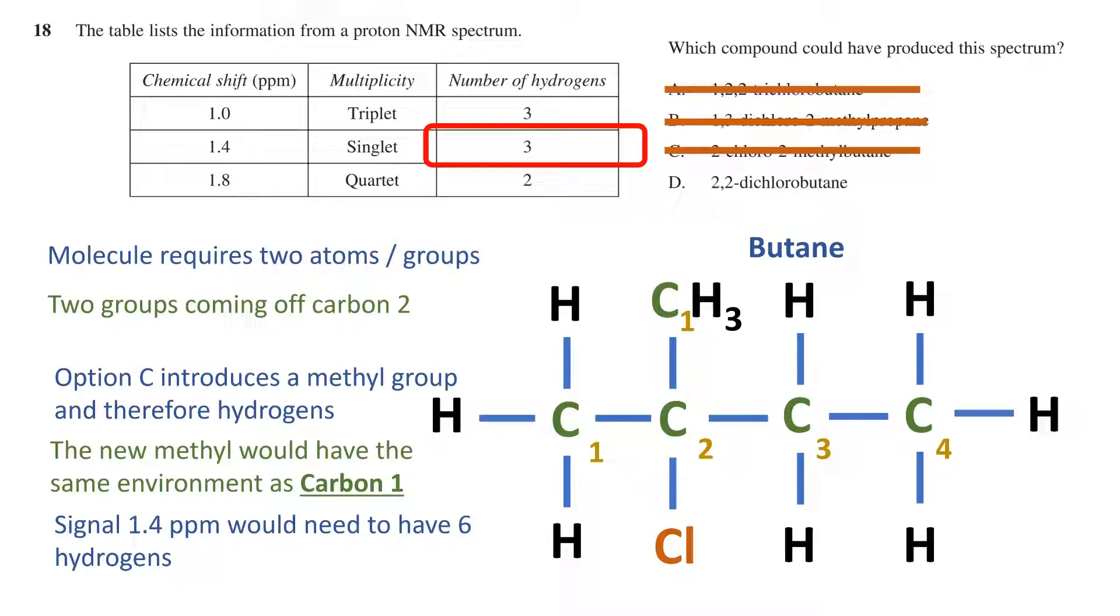We can see what option D looks like by replacing the methyl group with another chlorine. This will agree with the signals as we discussed previously and introduces no new hydrogens or hydrogen environments. Therefore, option D is the answer.